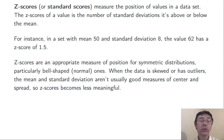Z-scores are a good measure for relative position within a data set when you have symmetric distributions, and in particular when you have bell-shaped or normal distributions. When you have data that's skewed or that has outliers, the mean and standard deviation aren't generally good measures of center and spread, and since the z-score is based on mean and standard deviation, it becomes less useful as a measure of relative position.